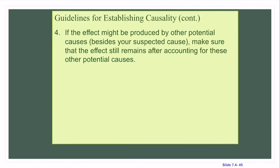If the effect might be produced by other potential causes besides the suspected cause, make sure that the effect still remains after accounting for these other potential causes. Remember, when we're doing an experiment there are so many variables that we can't control for, and you need to make sure you can account for them.